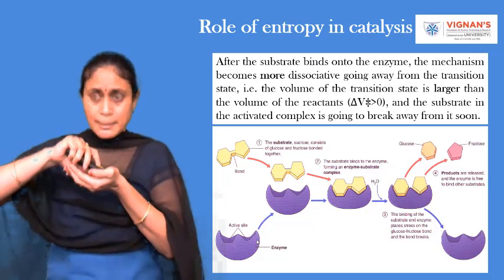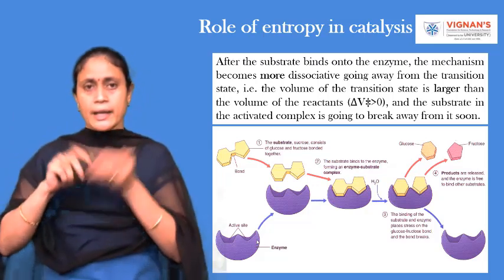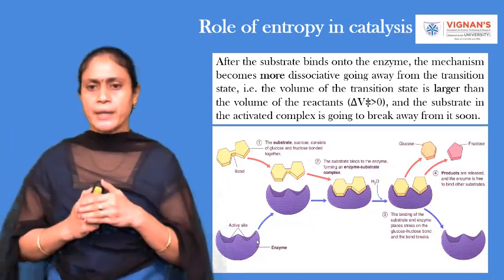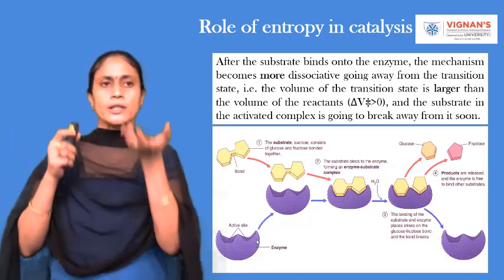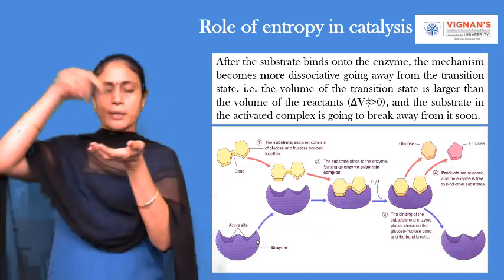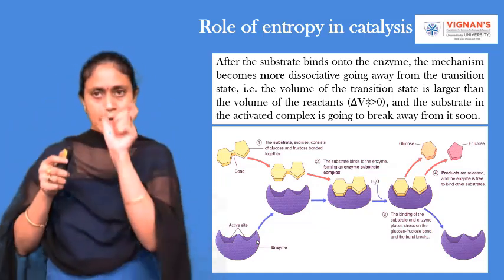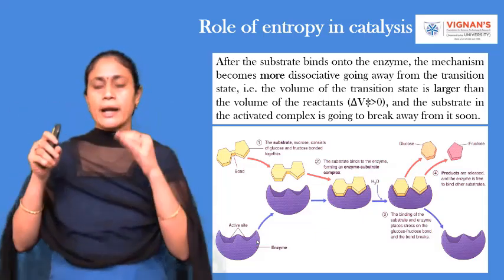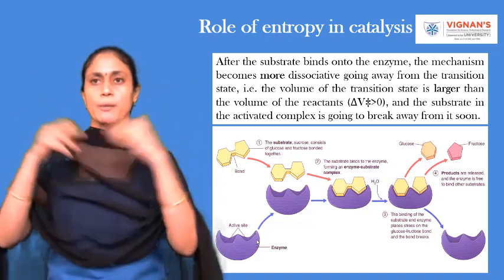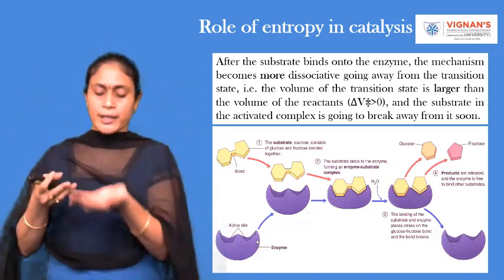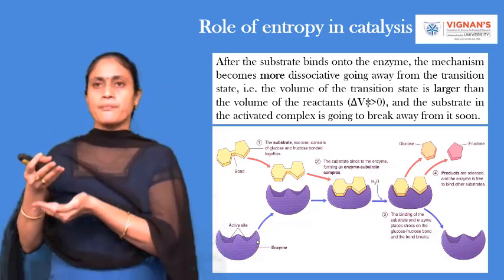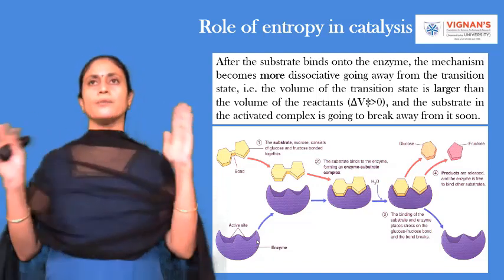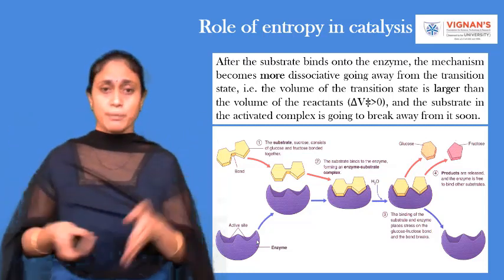Once this substrate comes and binds to the enzyme, an enzyme-substrate complex is formed. This binding of the substrate to the enzyme creates stress on the bond present between glucose and fructose. Because of this, the bond becomes weakened and breaks down. As a result, the glucose molecule and fructose molecule are released as products, and the enzyme is reoriented — it changes its conformation and is now ready to react with another substrate molecule.